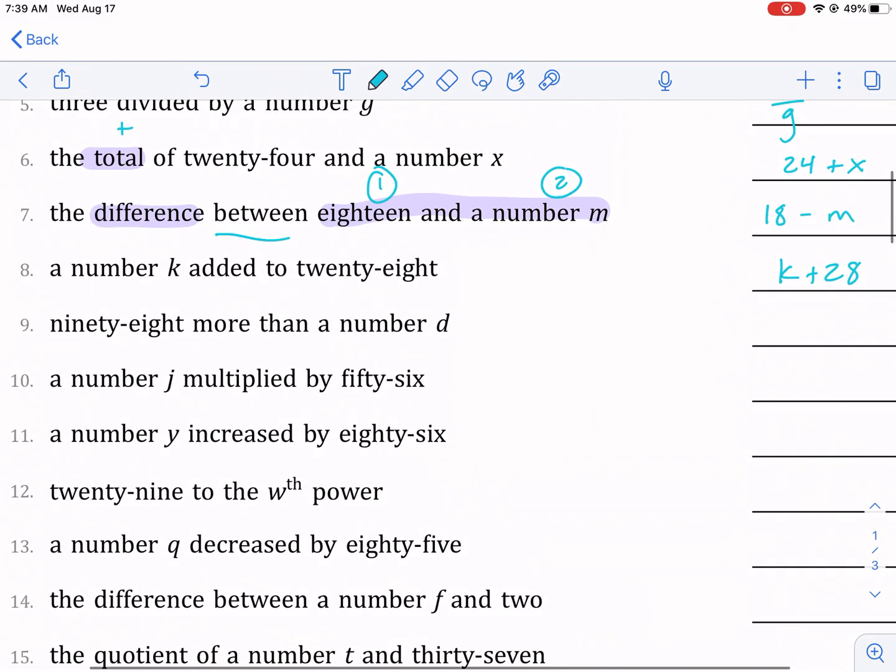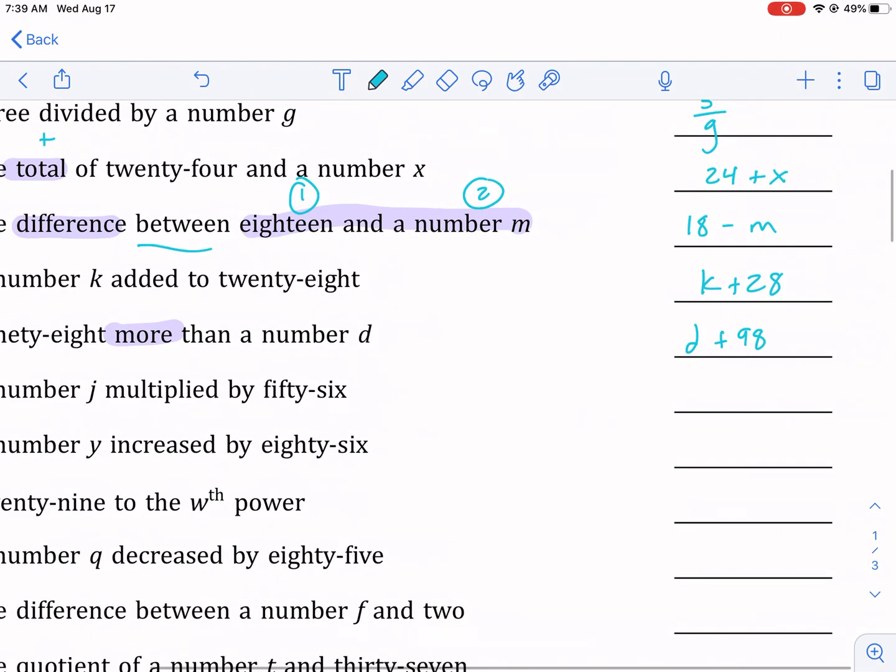98 more than a number d—this is another addition problem. So if we have 98 more, well how do you get 98 more? Well, you add it on to something. So we can say 98 more than a number d. Now I could write 98 plus d—it's the same thing.